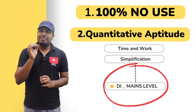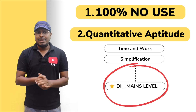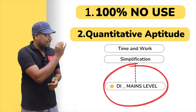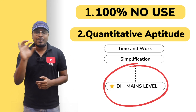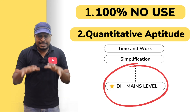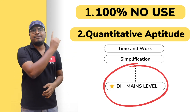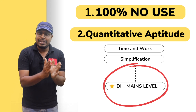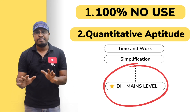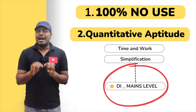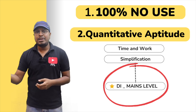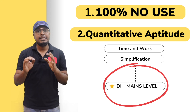Before watching this video, remember one important thing: the same data interpretation question I am going to teach is available as a test on my website or mobile application, in the quantitative aptitude section under data interpretation. First write the test and check your score — whether you are getting 5 out of 5 or struggling to understand the DI itself. After writing the test, come and watch this video for the solution. Without writing the test first, this video will be less useful. Analyze your mistakes, then watch this video.